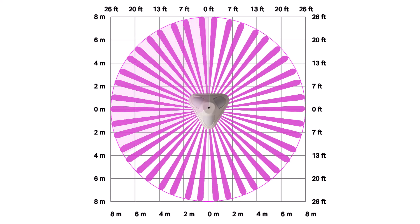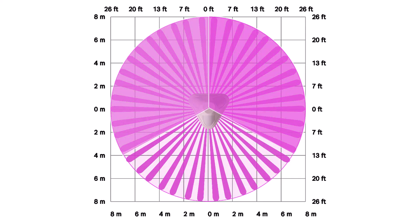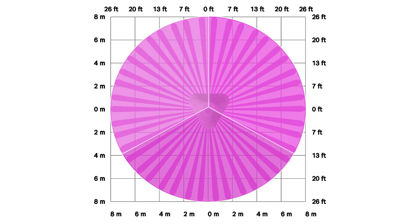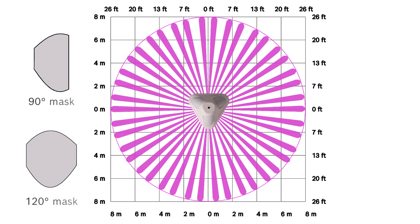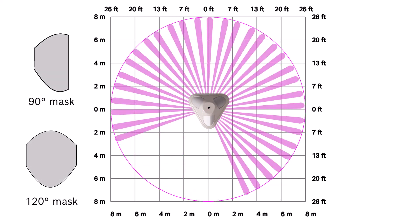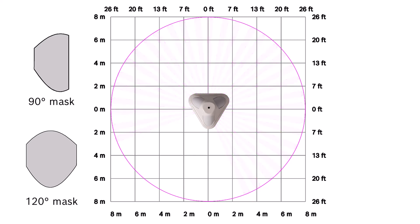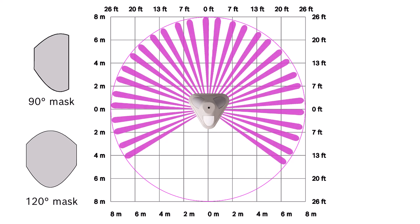The lenses split the coverage into three fully adjustable PIR zones. The coverage area can be reduced by using the masks provided. For example, here is the pattern with 90 degrees masked. Here it is with 120 degrees masked.